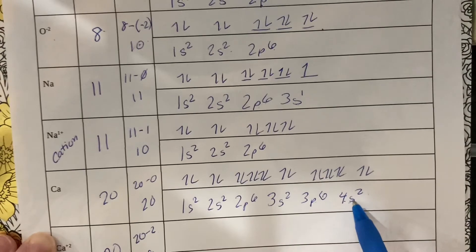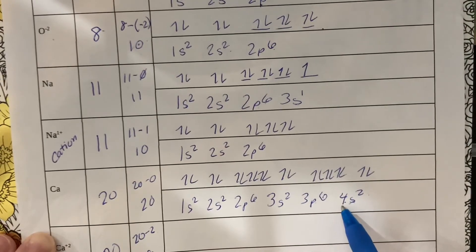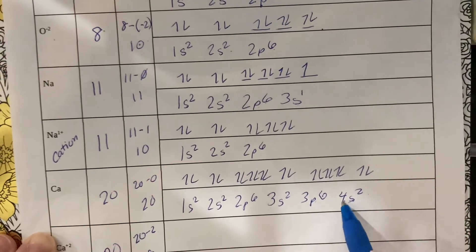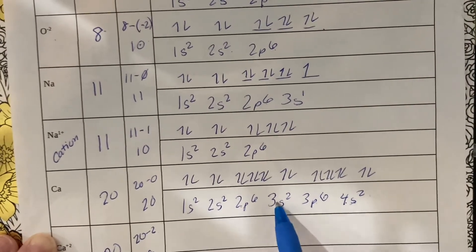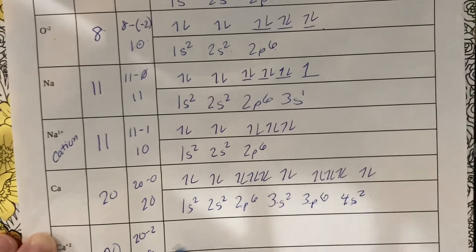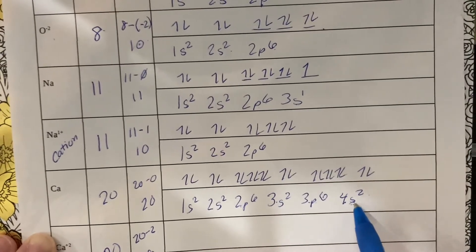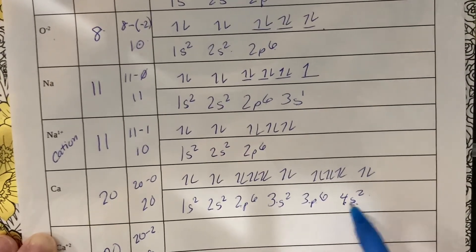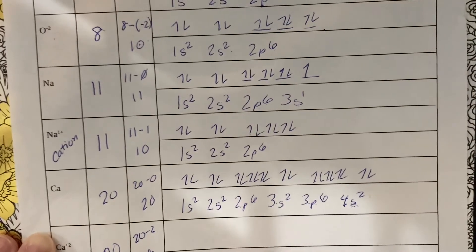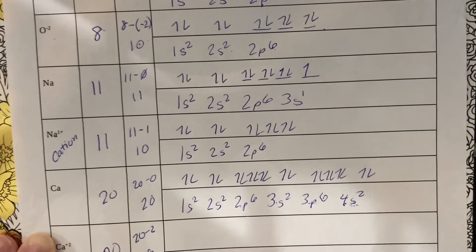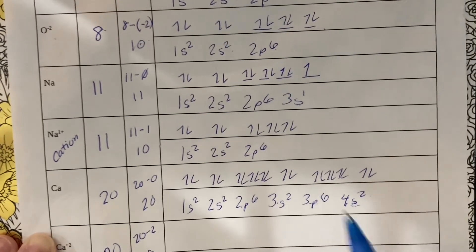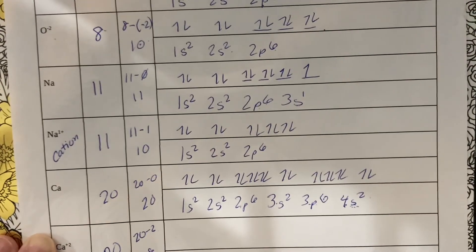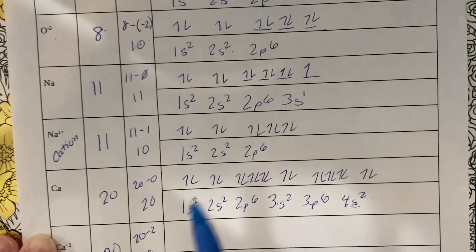You always take the electrons off the outer energy level or the highest quantum number. So we have row one, row two, row three, and row four. If I'm going to lose two electrons, I lose it from that highest number. So when I rewrite: 1s² 2s² 2p⁶ 3s² 3p⁶. He has eighteen electrons, so he's isoelectronic to argon.